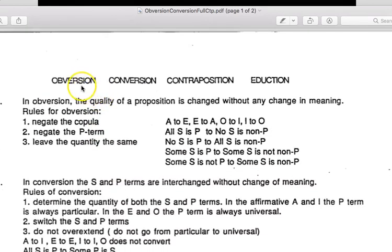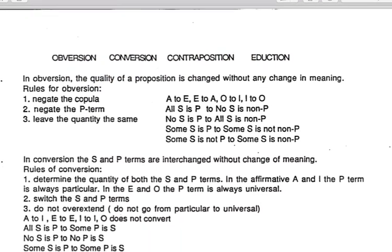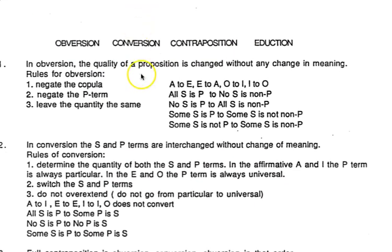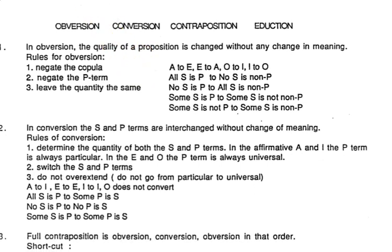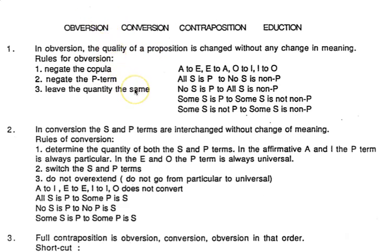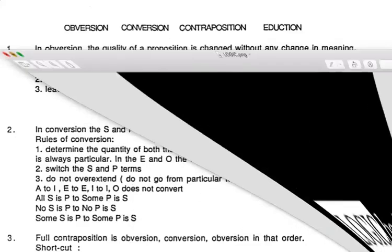I want to show them to you because we're going to be using these handouts. This is a handout called Obversion, Conversion, Contraposition, and Eduction. And it's basically a list of rules for how to manipulate a statement, to obvert it or convert it, to get it to fit on the square. Eduction is how we're going to read the truth value of the statement once it's on the square. Now, there's another handout. Let me get rid of that.